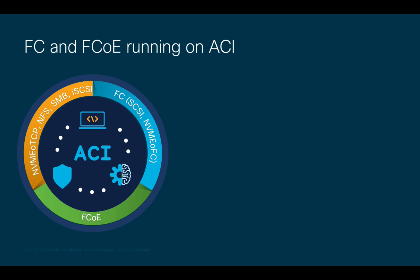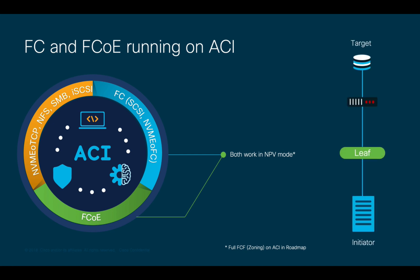As of ACI 5.2, both protocols are implemented running in NPV virtualization mode, also known as NPV. What NPV mode means is that when you connect a server or initiator to your ACI leaf, the fabric login process, also known as FLOGI, which sends the initiator's worldwide name, will be forwarded to a Fiber Channel switch or director, such as an MDS, Nexus 9K running NXOS, or Brocade switch.